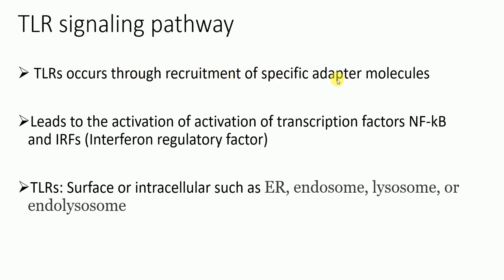Toll-like receptor signaling actually occurs through the recruitment of specific adapter molecules. These adapter molecules are MyD88, TRIF, TIRAP, TRAM, etc. These ultimately lead to the activation of transcription factors NF-κB and interferon regulatory factors, or IRFs.